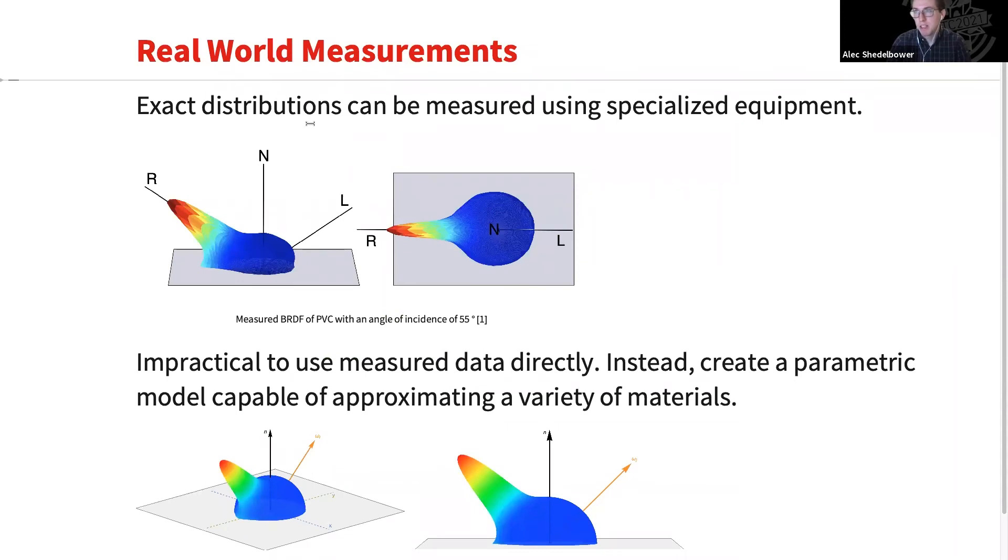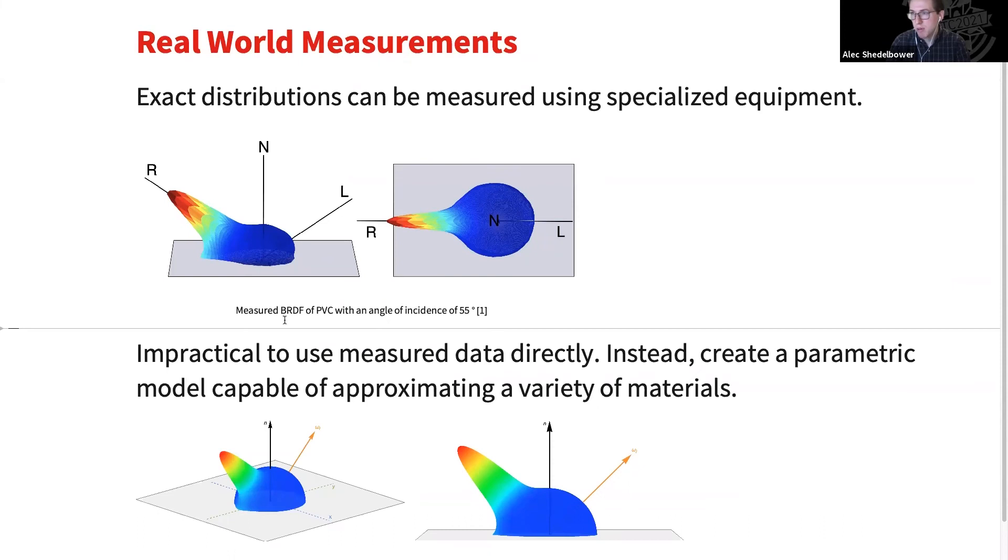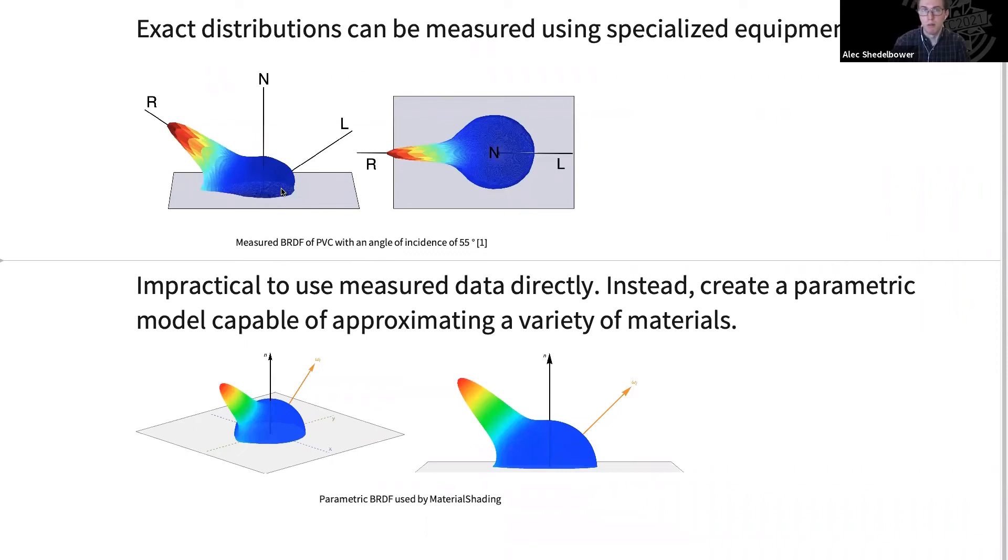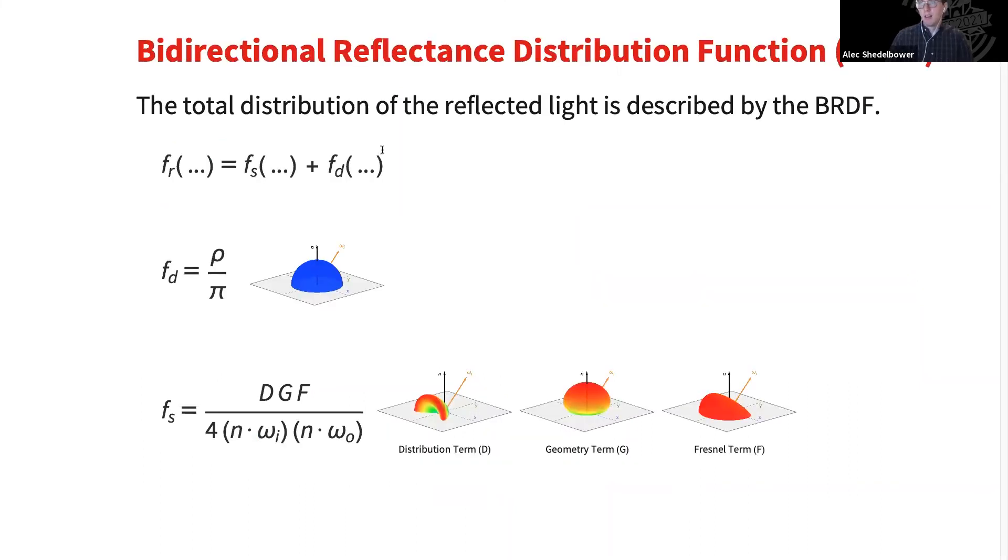So this isn't just a theoretical thing, but we can actually measure these distributions of real materials using very specialized equipment in lab settings. Some people have done this before. There are written papers where we take certain materials. In this case, this is an example of PVC, where they shine a light from a very specific direction, and they measure how much light reflected in all directions on the hemisphere. So we can see here we get that distinct sort of diffuse lobe and that specular lobe coming off on the left side here. Now it's not really practical to use this measured data directly to render a surface. So instead we create a parametric model that can approximate it using a variety of parameters, and then it can cover a wide range of materials. It's a lot more flexible and efficient when we go to render. If you see here, we actually have an example of the sort of distribution used by MaterialShading. So we still get that very hemispherical lobe here for diffuse lighting, and then that specular light coming off on the left side.